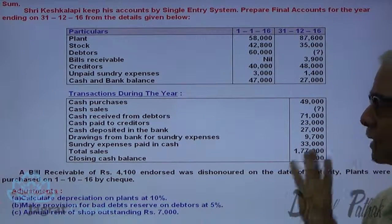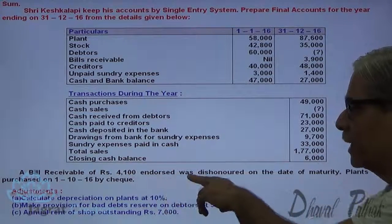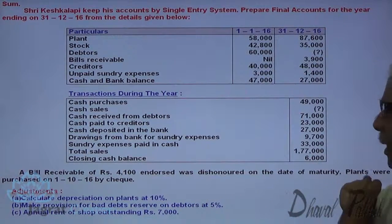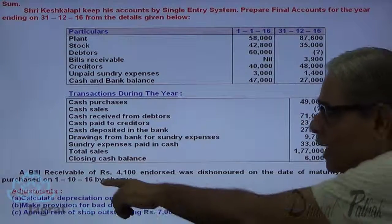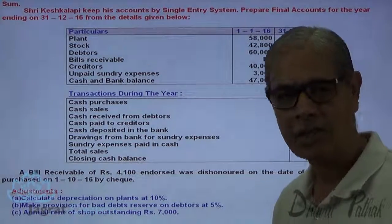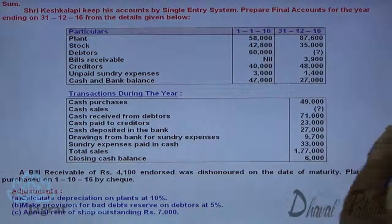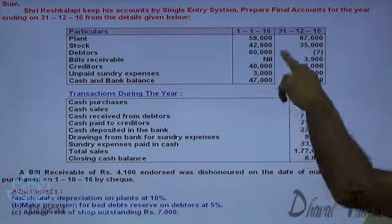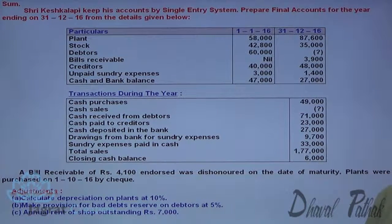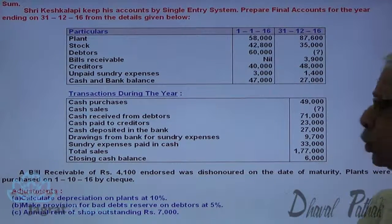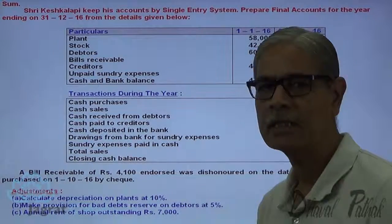You can find out the bank balance after a couple of minutes. Bills receivable of 4,100 was endorsed and dishonored on the date of maturity. Plant was purchased on 1/10/2016 by cheque. To find the amount, you should find the difference between the opening plant balance of 58,000 and closing balance of 87,600. That difference is the purchase of plant, and payment was made by cheque.